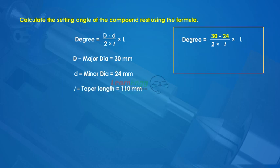l taper length is equal to 110mm. L overall length is equal to 210mm. This equals 5.7 degrees.